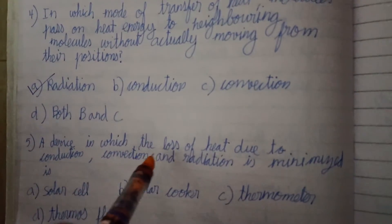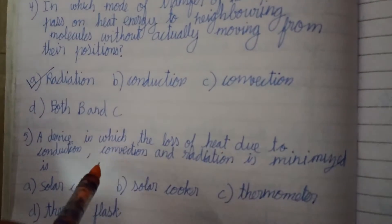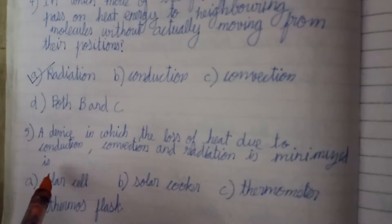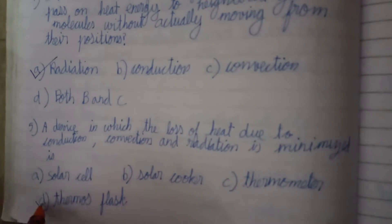A device in which the loss of heat due to conduction, convection and radiation is minimized is thermos flask.